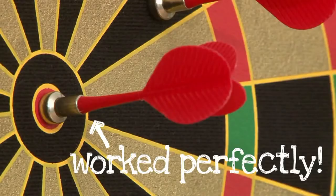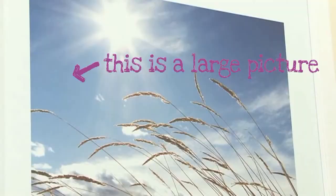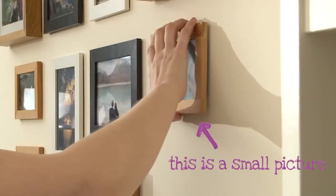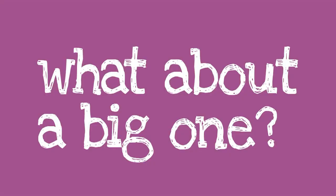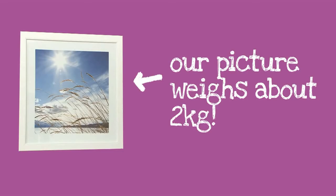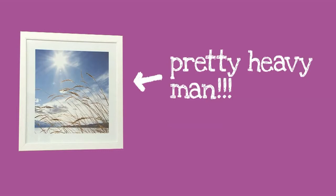Next up was a large picture. Now, hanging a small picture frame on magnetic plaster is pretty easy, but what about a big one? One with a heavy glass pane weighing about two kilograms, which is pretty heavy.